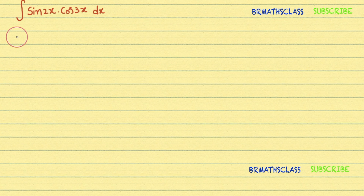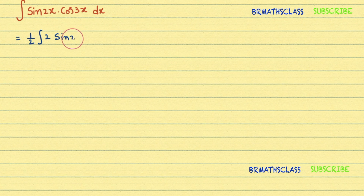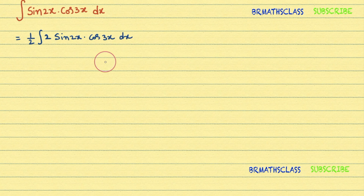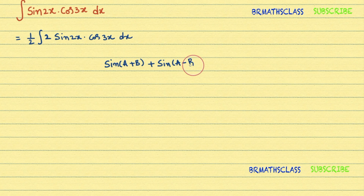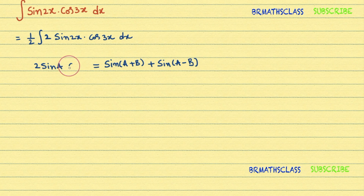First, I'll multiply the numerator and denominator by 2, giving us one-half times the integral of 2·sin 2x·cos 3x dx. In trigonometry, we know the formula: sin(A+B) + sin(A−B) equals 2 sin A times cos B.